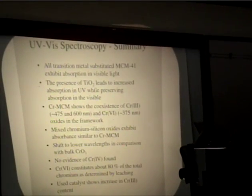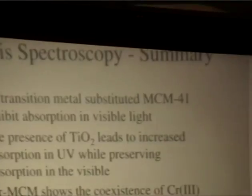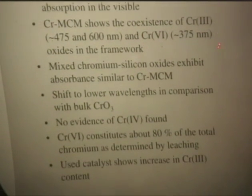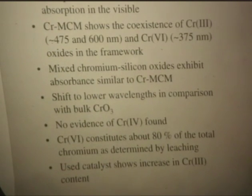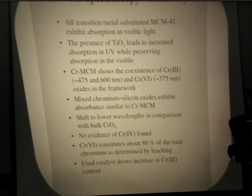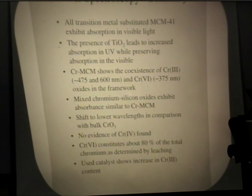If we compare our materials with pure oxides of chromium, we can elucidate the nature of the peaks and shoulders on the spectra. At 375 nm we have a peak due to CrO3, and we have a shoulder at about 450 nm due to Cr2O3. This hints at the coexistence of Cr+3 and Cr+6 inside the framework. We can also estimate the ratio: about 80% of the chromium is in Cr+6 form. To summarize UV spectroscopy: our materials absorb in visible light even when we load TiO2; we have coexistence of Cr+3 and Cr+6; and we did not find any evidence of Cr+4, which was reported by other researchers.